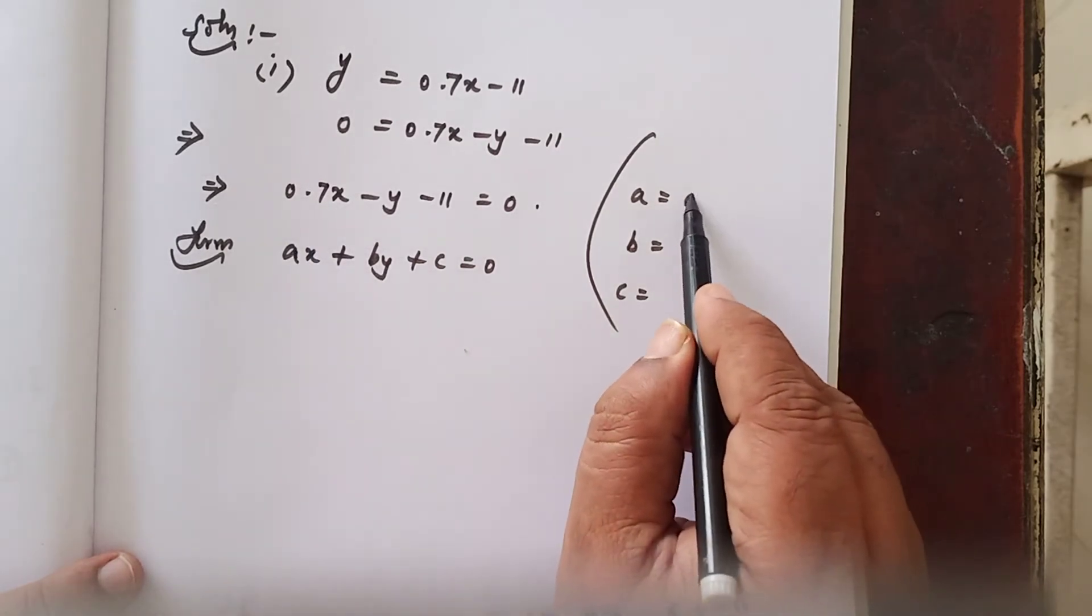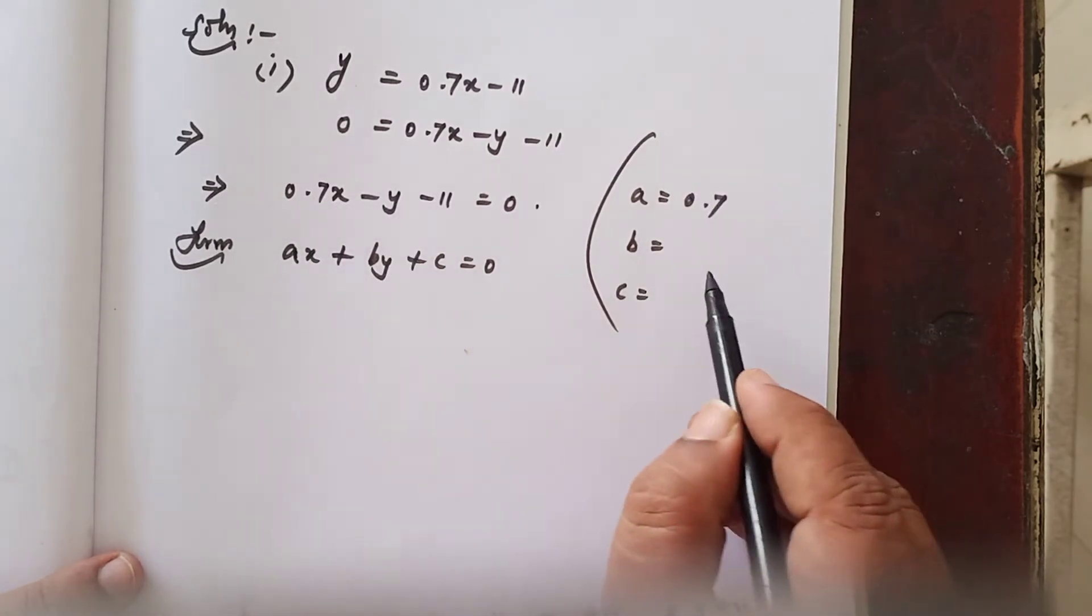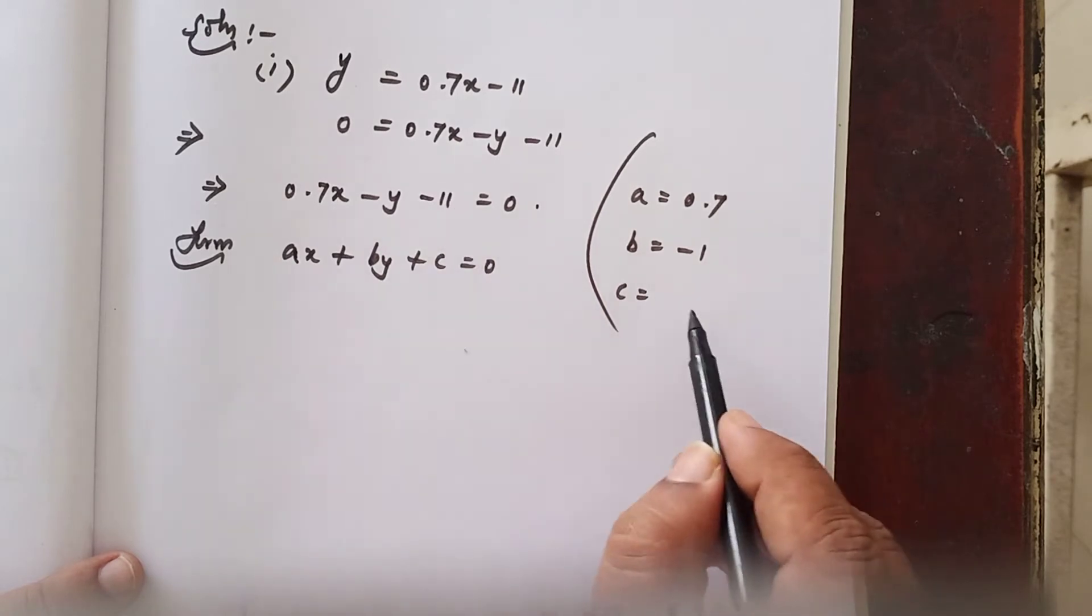A is the coefficient of x, that is 0.7. B is the coefficient of y, that is minus 1. C is the constant term minus 11.